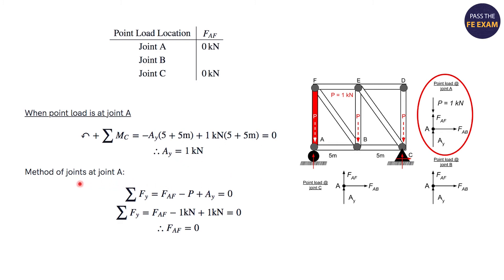And then you use the method of joints at A, and you do a simple arithmetic problem, and you figure out that the force of AF is equal to zero. And remember, again, you have the positive one going down, and then you have the AY going in the opposite direction. And that's what they gave you, the zero.